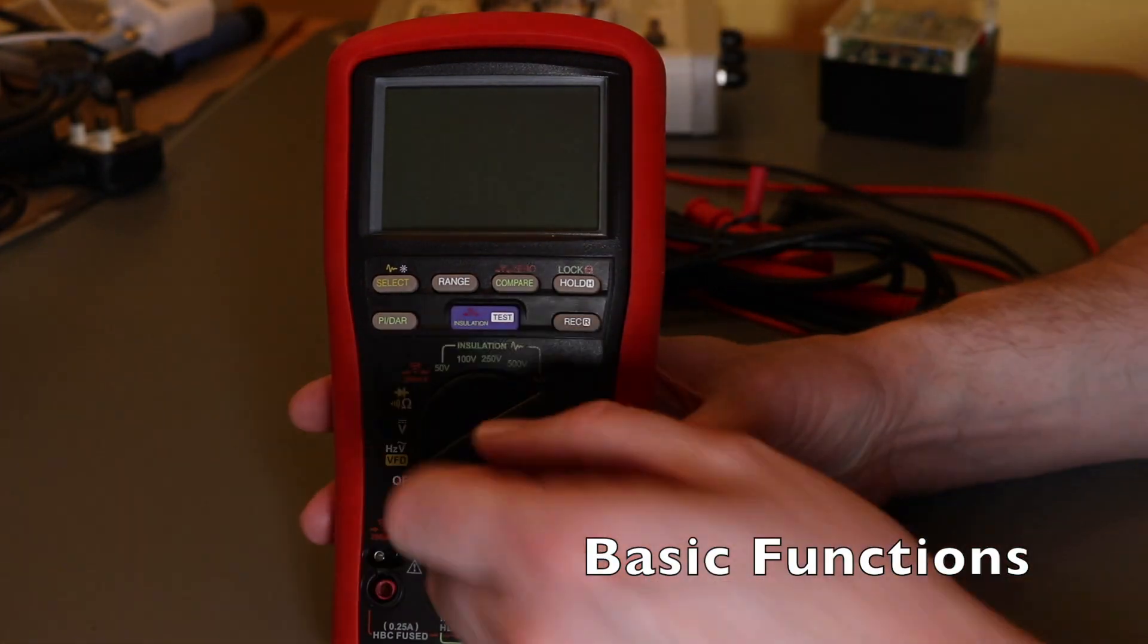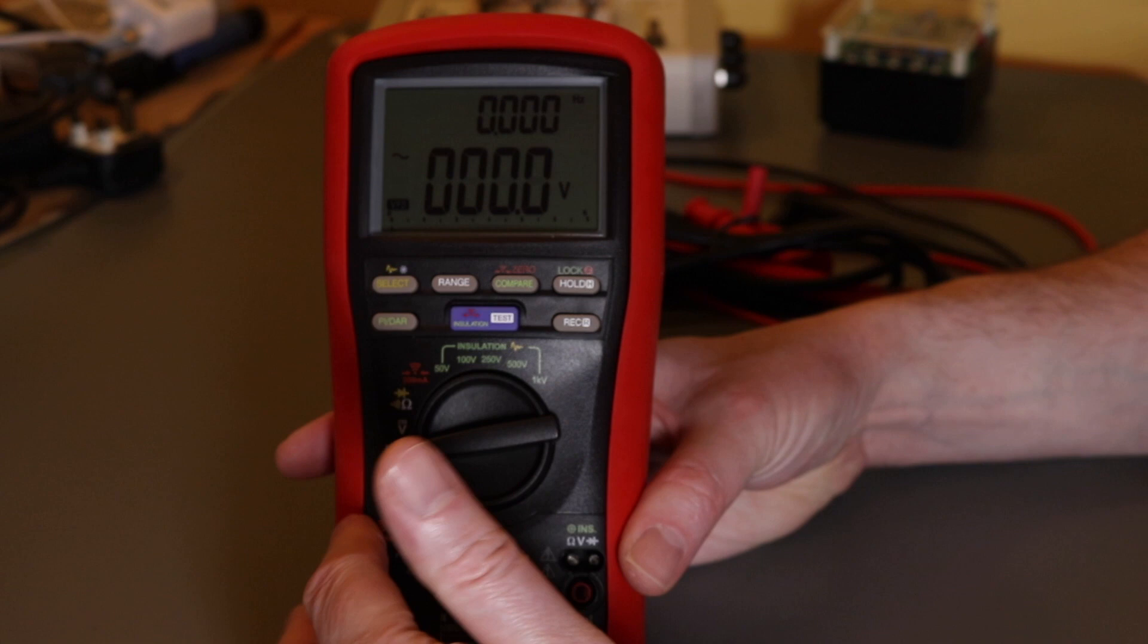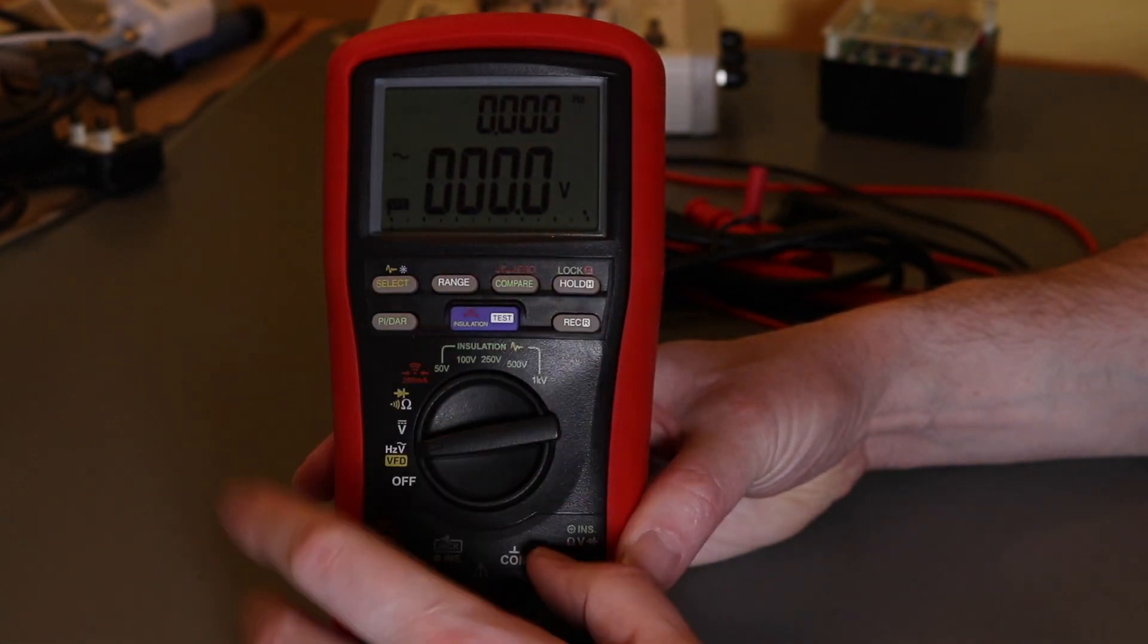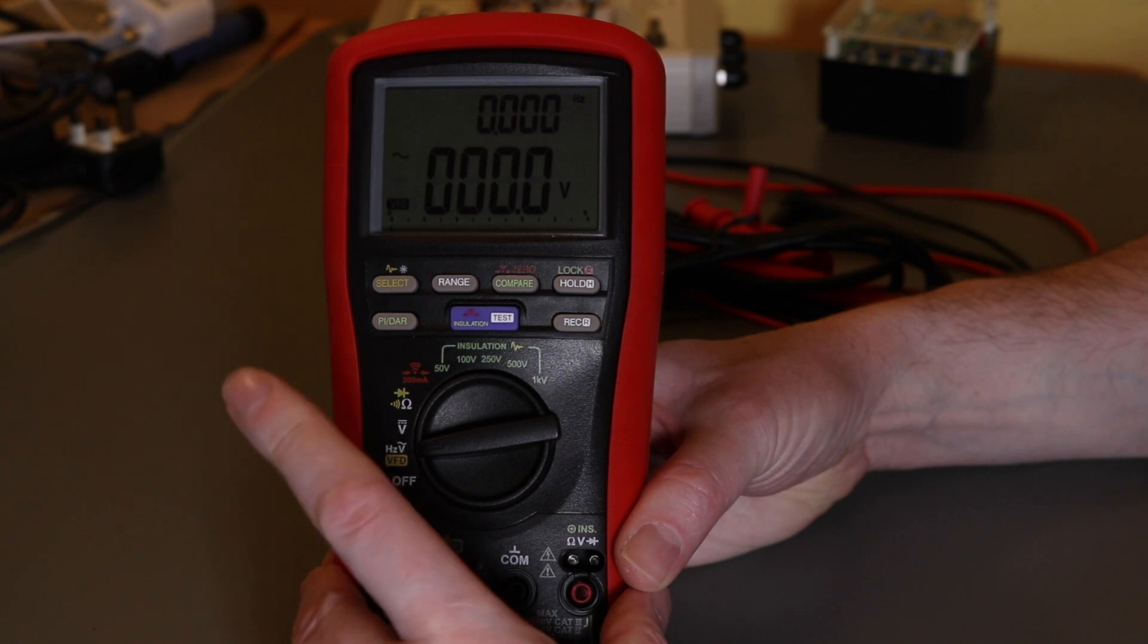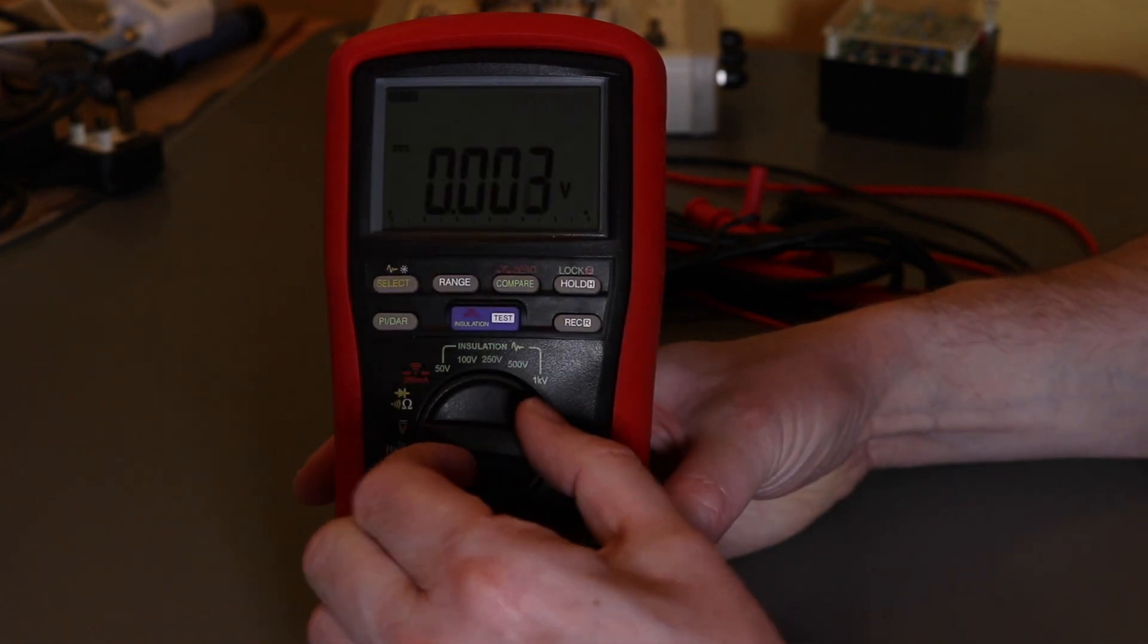So this is the meter itself. The first point on the rotary switch is AC volts. Also have Hertz and a VFD mode on the AC volts as well. Then you have DC volts.